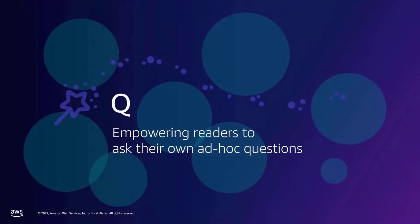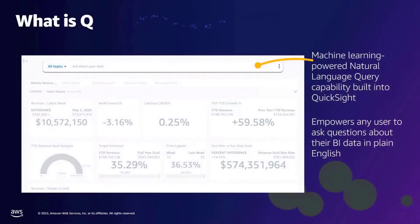Let's start with a deeper look into Q. Q is a natural language querying capability which is part of QuickSight and lets end users ask ad hoc questions of their data. It allows them to make sense of their data by interpreting questions and answering them correctly — that is probably the most challenging problem in this space. The key customer problem Q solves is when a business user wants to ask a new business question not answered by existing BI dashboards, they rely on BI teams to create and update data models and dashboards, which can take several weeks to complete.